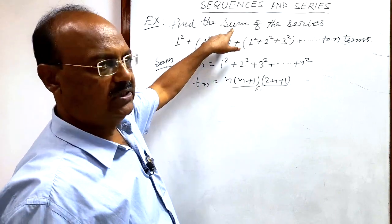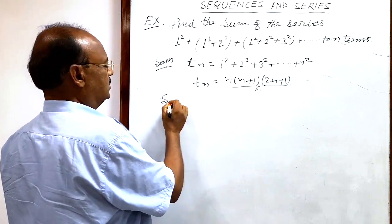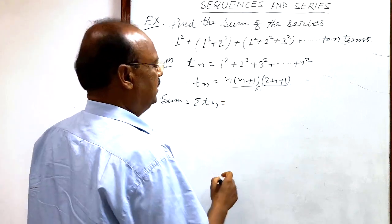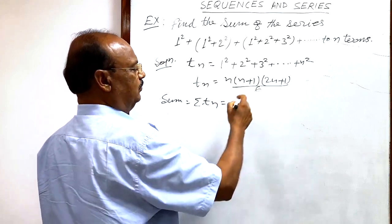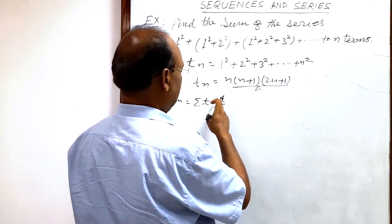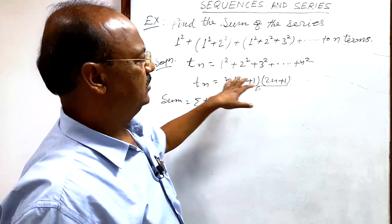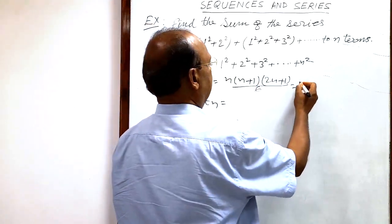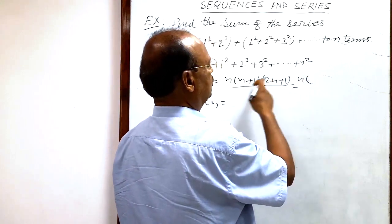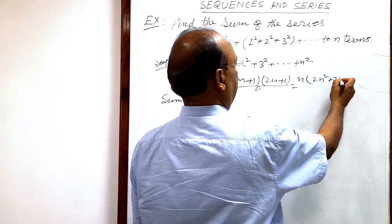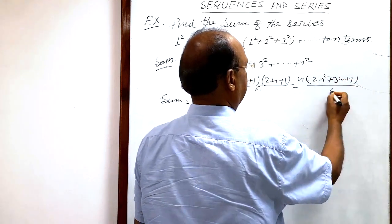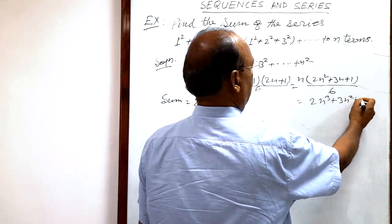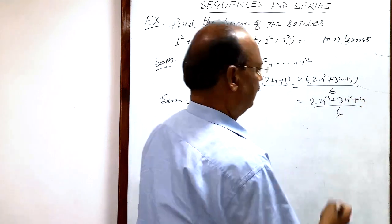Now we have to find the sum of the series. The sum S will be equal to sigma tn. Before applying sigma, we can simplify this expression, which will be more convenient. Multiplying out the factors, tn = (2n² + 3n + 1)/6, and multiplying with n gives (2n³ + 3n² + n)/6.